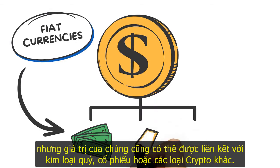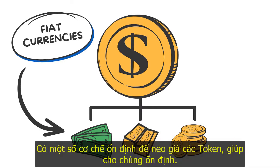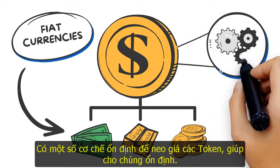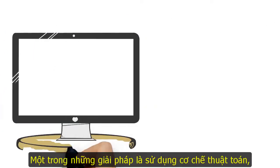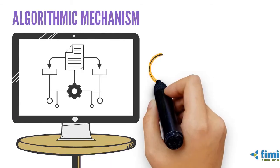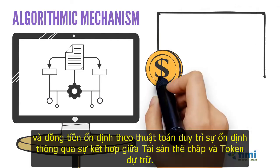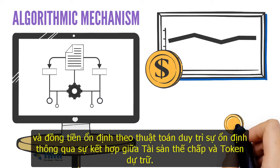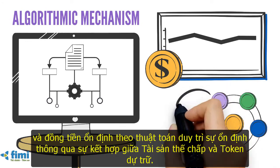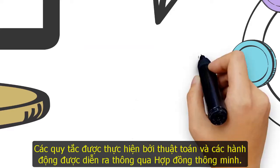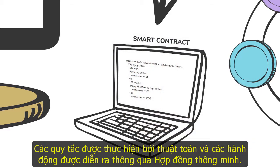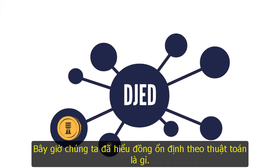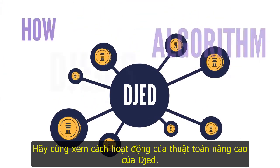Stablecoin value can also be linked to precious metals, stocks, or other cryptocurrencies. There are a few stability mechanisms to peg tokens in order to make them stable. One of those solutions is performed by an algorithmic mechanism. An algorithmic stablecoin maintains stability through a combination of collateral and a reserve token, with its rules defined by smart contracts.